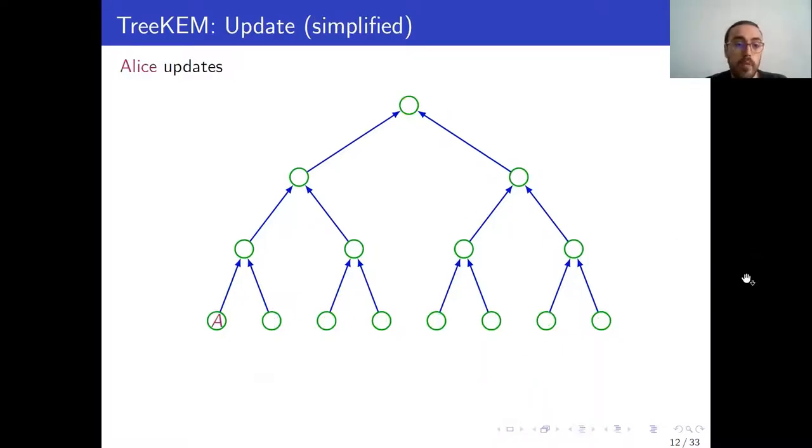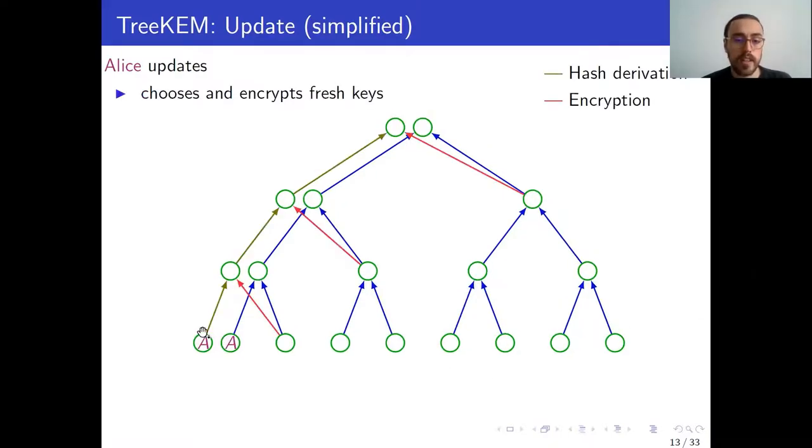Now, let's see how one user could update their keys. So let's say Alice here belongs to this group of eight users and wants to update her keys. What she does first is she samples a new key for her leaf node and derives new keys along her path by means of a hash evaluation, signaled here with a golden edge. These new keys, she then encrypts under the public key of the node in the co-path so that all users now have access to the new keys in their path. So for example, if we take this third user here, they will have access to this secret node, and therefore will be able to decrypt the ciphertext, gaining access to this key, and by evaluating the hash, gain access to the new group key.